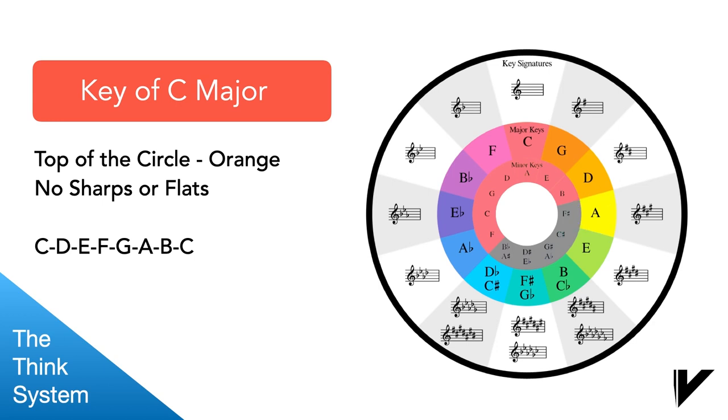By putting the circle of fifths on your music stand, instead of a sheet with the scales where you go through and circle all the flats and sharps, not really understanding how this is built and put together, you'll begin to understand how to build these scales on your own so that you know exactly what you're doing and why you're doing it.